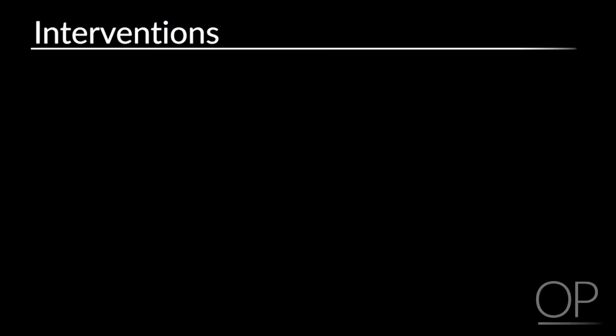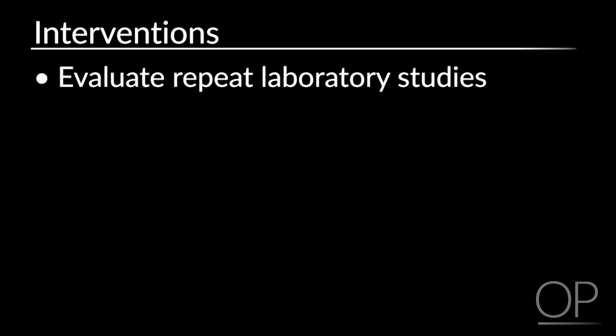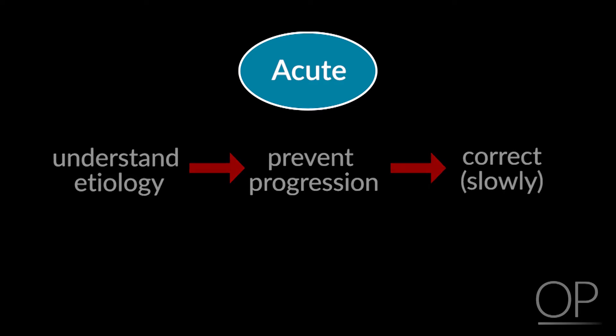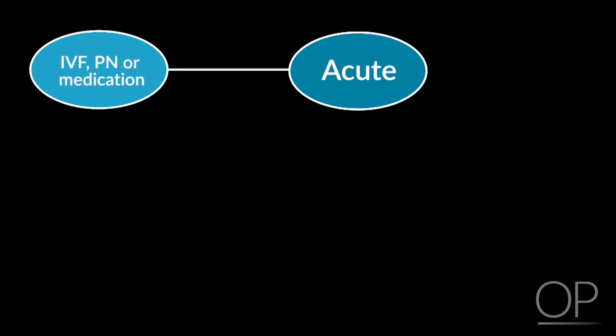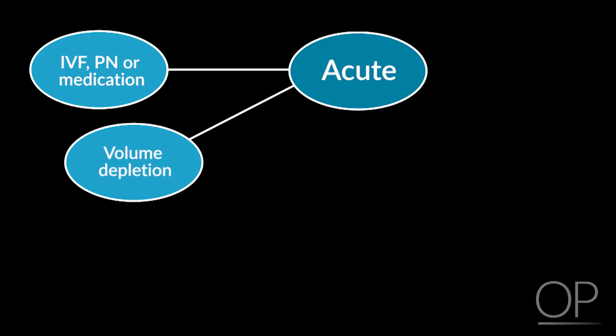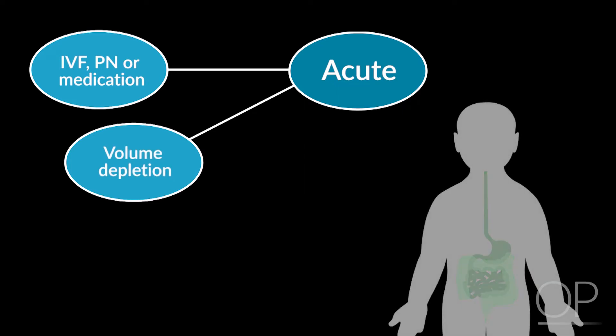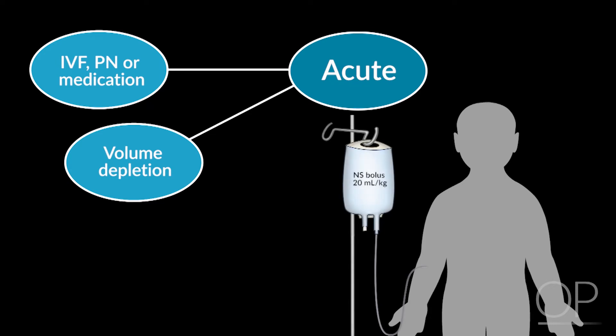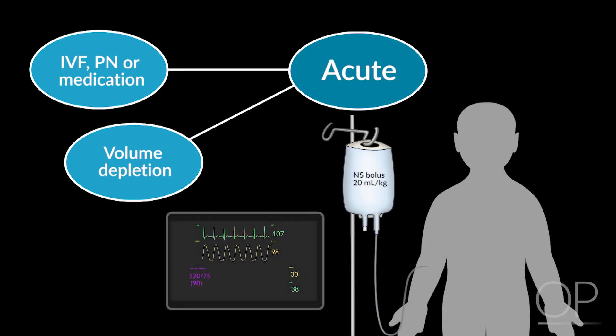Interventions to initiate include evaluating those repeat laboratory studies, which should result quickly to determine whether the sodium change is real and may have actually worsened since the time of the initial check. If the process is acute, then you must act to understand the etiology, to prevent progression, and to slowly correct the course. If there is concern for IV fluid or parenteral nutrition bag or medication side effect, then please stop it and call the pharmacy. If the patient appears to have volume depletion, like a recent history of vomiting or diarrhea, or an exam with tachycardia, hypotension, or delayed capillary refill, give a normal saline bolus of 20 cc per kilogram over 20 minutes and monitor for improvement in vital signs.